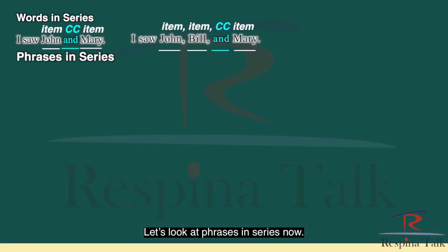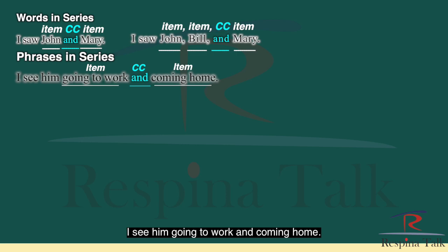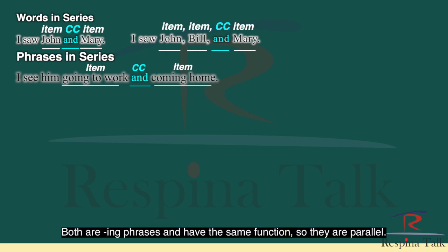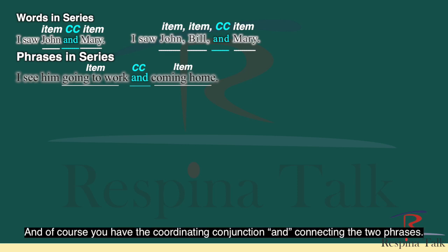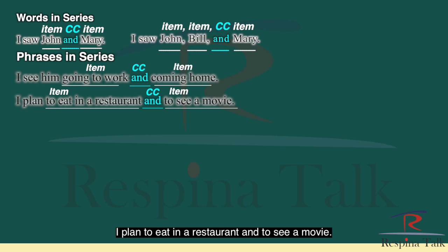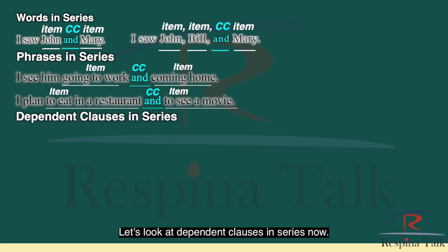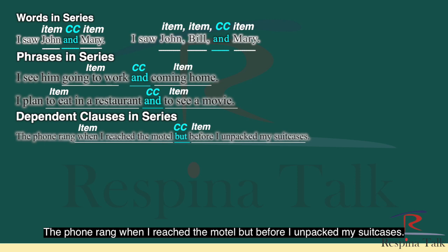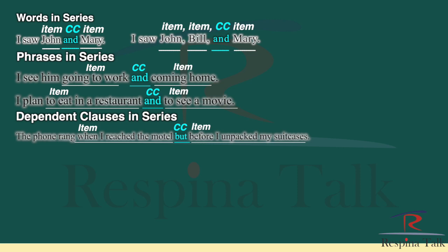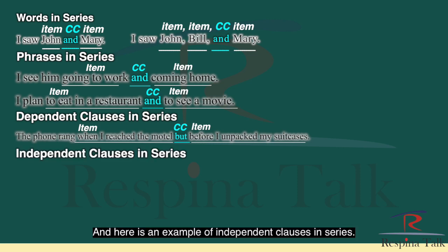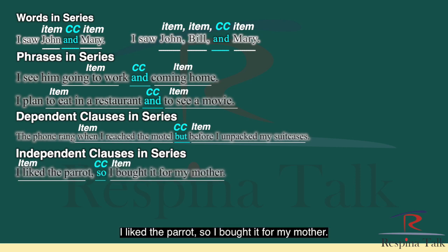For dependent clauses in series: "The phone rang when I reached the motel, but before I unpacked my suitcases." For independent clauses: "I liked the parrot, so I bought it for my mother." And for complete sentences in series: "She sold the car for three good reasons. It had no tires. It had no brakes. It had no engine." Notice that each item — whether a word, phrase, clause, or sentence — has the same form as the other items in the same series.